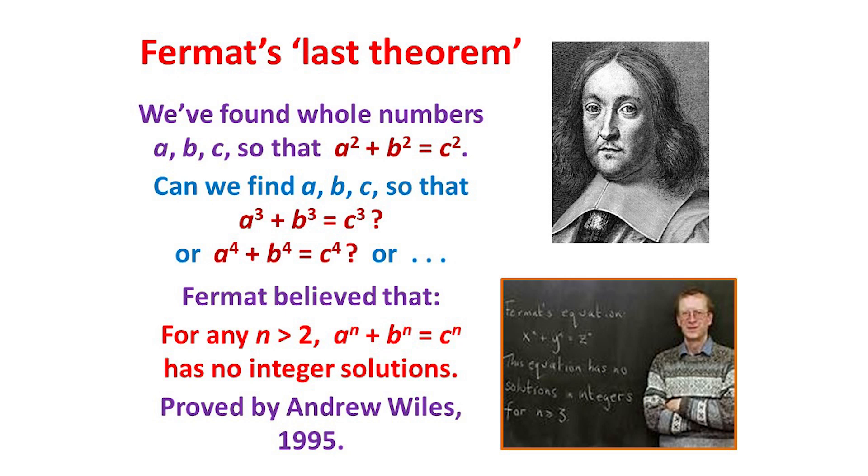He further claimed to have proved that, for any whole number n larger than 2, the equation aⁿ + bⁿ = cⁿ has no non-trivial whole number solutions. But few people believed his claim. And despite many attempts as a valid proof, no one else could do so either.